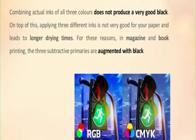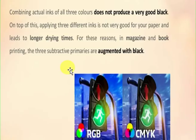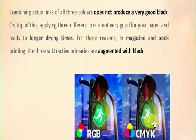Let us understand the difference between the RGB color model and the CMYK color model by looking at this image. Combining actual inks of three colors does not produce very good black, and applying three different inks is not ideal for paper as it leads to longer drying time. For this reason, in magazine and book printing, the three subtractive primaries are augmented with black. In this figure, we can see that in RGB the green light is too bright, while in CMYK the green light is too dim. The blue color appears natural, and the RGB color model is generally better than CMYK for display — which is why we see differences between a printed document and the display on a monitor.